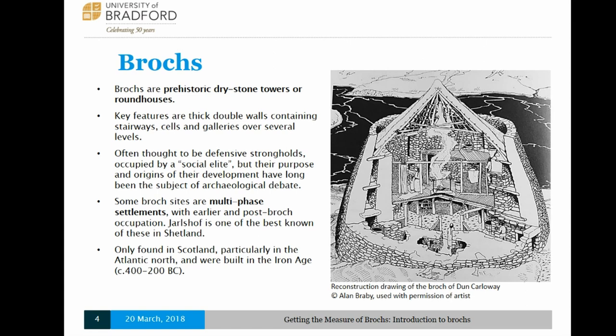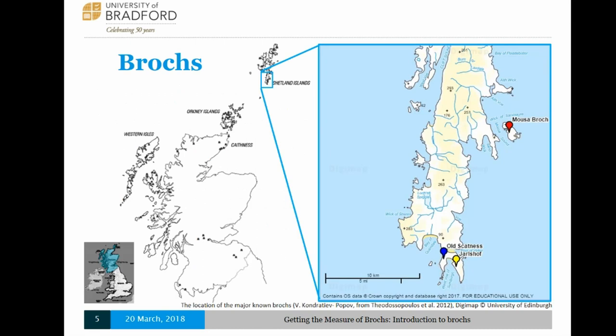Brochs are only found in Scotland. As you can see on this distribution map, they are mostly located towards the north of the country across the Atlantic region. The three sites I'm looking at are located in Shetland, towards the very far north of the British Isles, all based in southern Shetland. Old Scatness and Jarlshof are at the very southernmost tip of the mainland, and Mousa Brock is on the now uninhabited island of Mousa, just a couple of kilometres to the north.